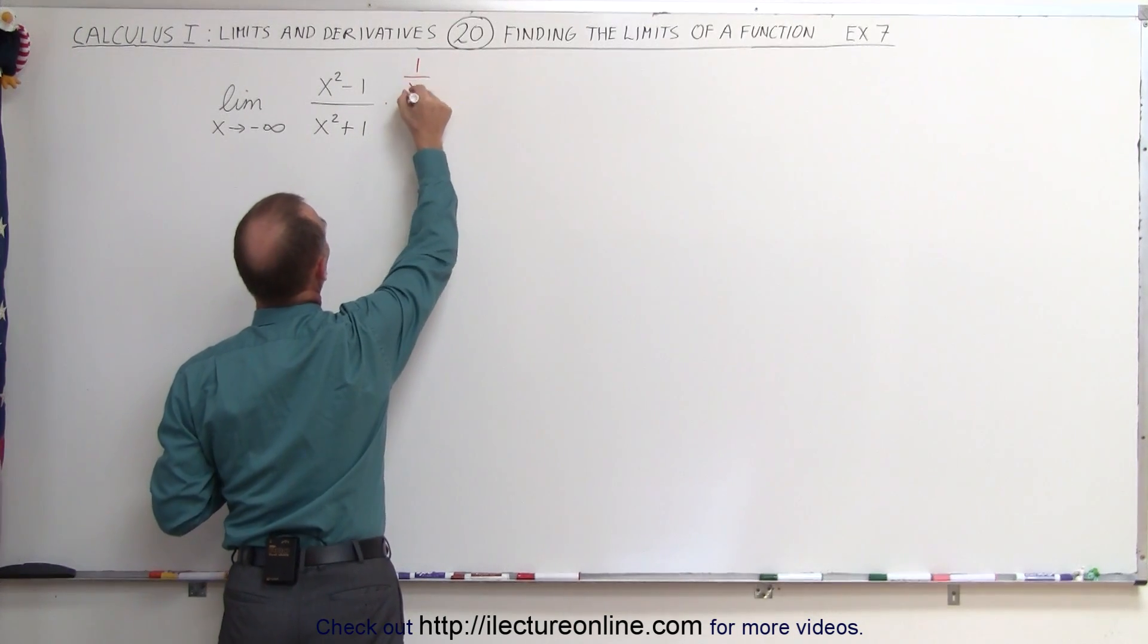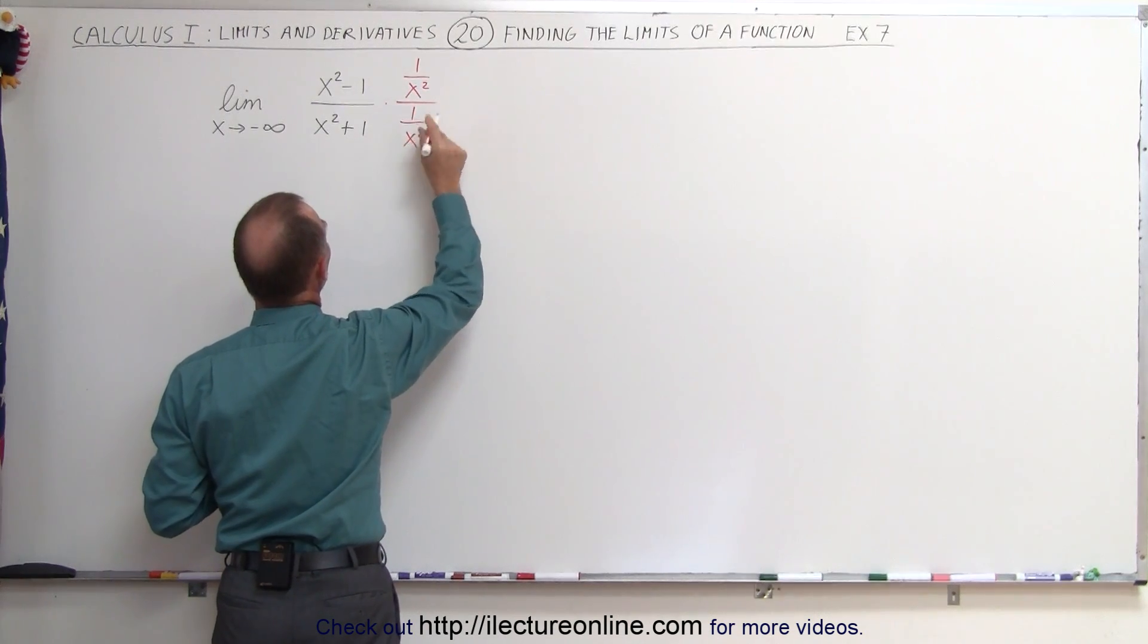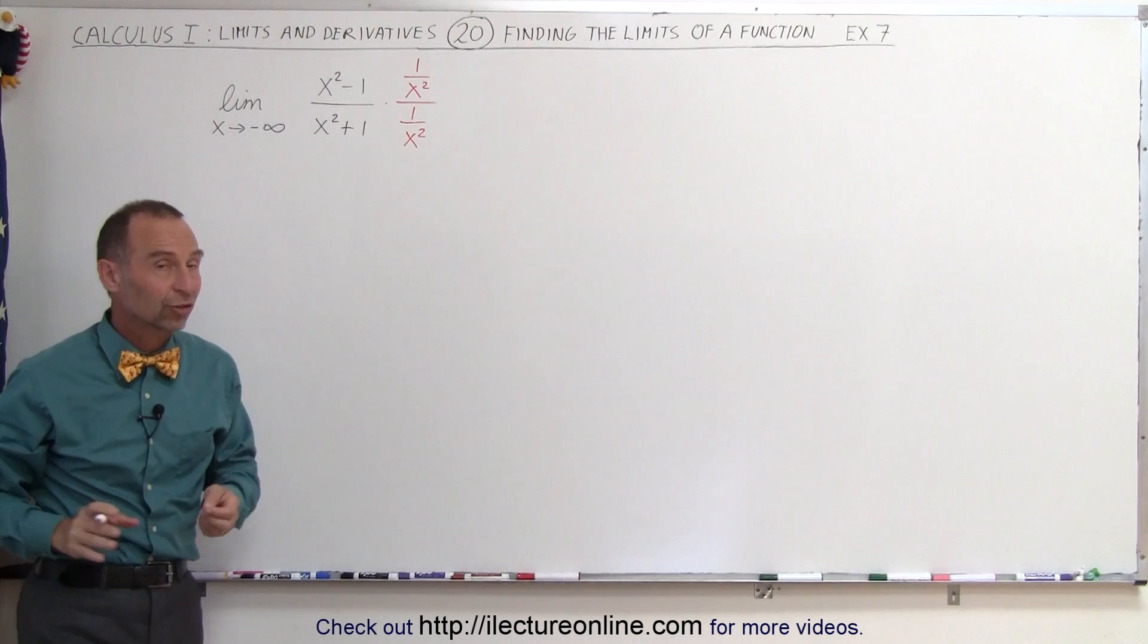So we've got 1 over x squared for the numerator and 1 over x squared for the denominator. So when we multiply, we're essentially dividing by x squared.